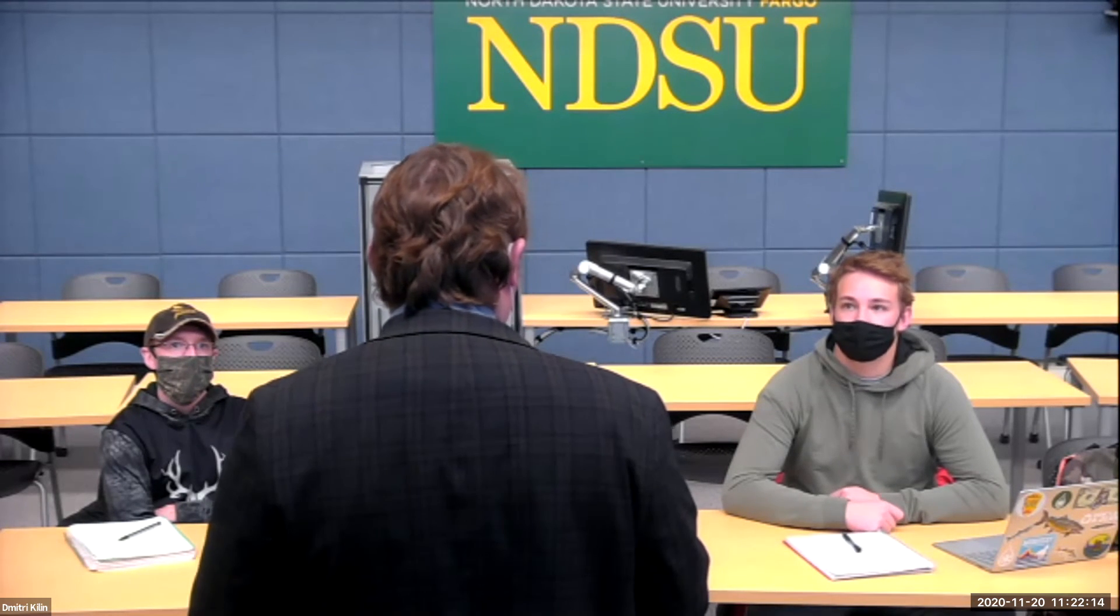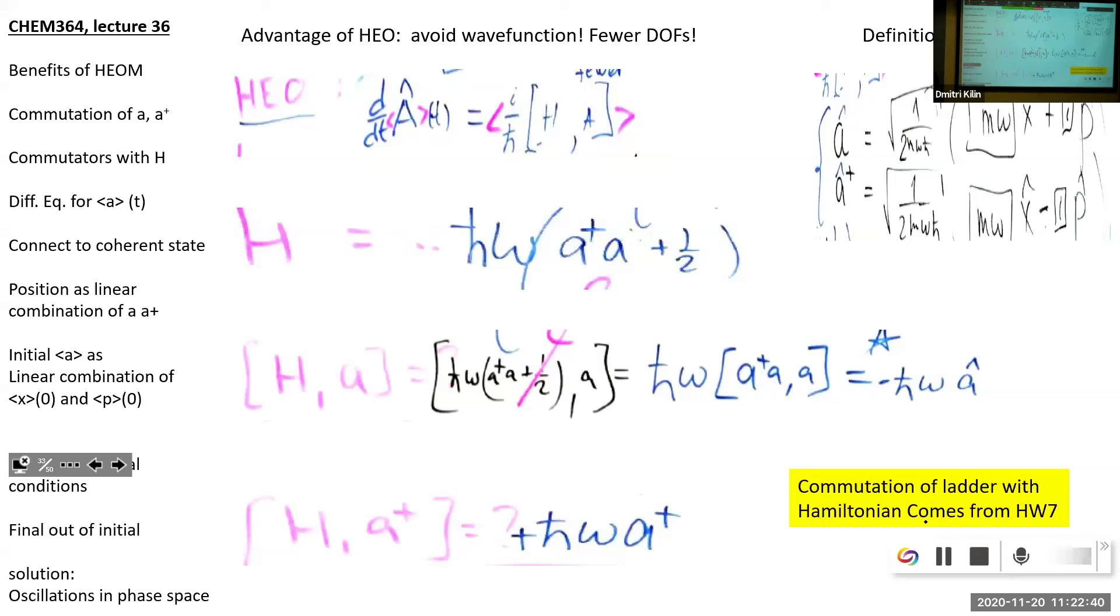Then find how the expectation value of creation and annihilation operator develop in time. And then go through this chain back. It will be the quickest possible. And the reason for this is that Heisenberg equation of motion for annihilation operator is probably the simplest implementation of the concept of Heisenberg equation of motion in the world. So the plan is as follows. We take commutation of annihilation with Hamiltonian. We find Heisenberg equation of motion for annihilation operator. And then we practice definition, how to compose position out of creation and annihilation.